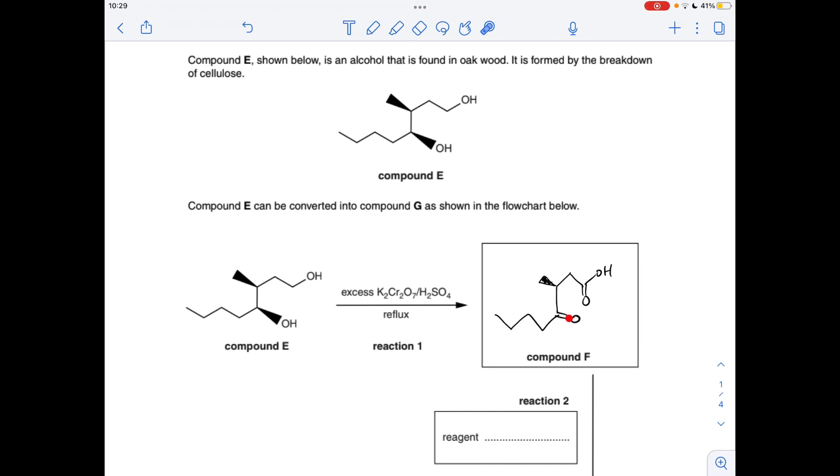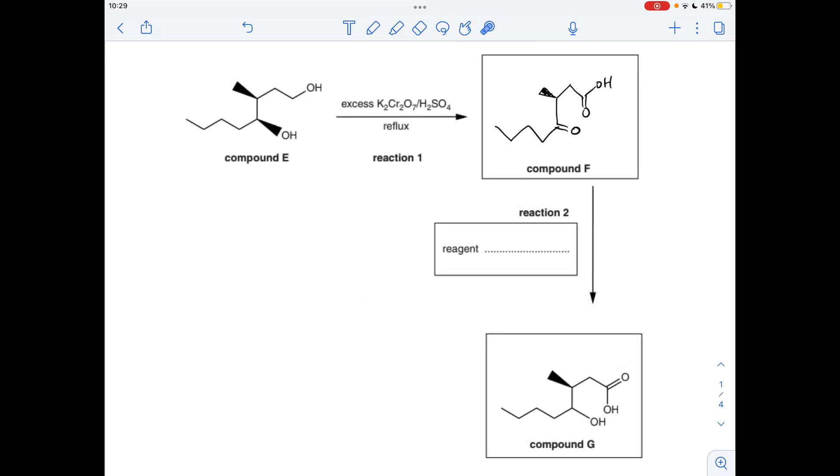This part of the molecule is trigonal planar, so we lose the wedge for this bond here. Moving on to the reagent for reaction 2: the only change is the ketone group has gone back to being a secondary alcohol, so we need a reducing agent to do that. The reducing agent is NaBH4.